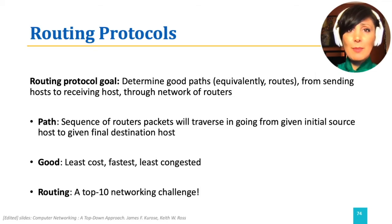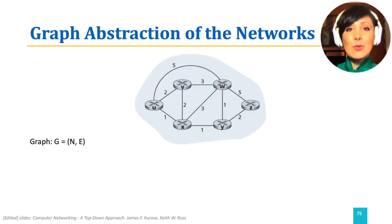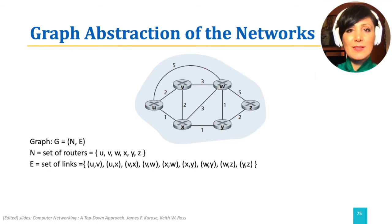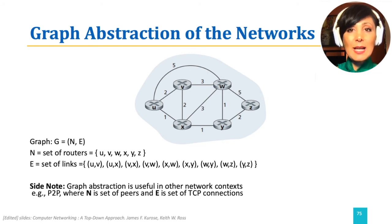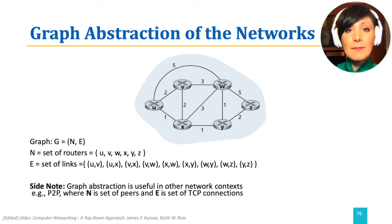This is not a trivial problem. We use a graph abstraction to formulate it. A graph has a set of N nodes and E links that connect the nodes. Nodes represent routers in the network. Links, depicted by a tuple consisting of two nodes, show the connections between those nodes. Note that graph abstraction with different definitions of N and E can be used in many other contexts — even in networking for other networks such as peer-to-peer networks, where N is the set of peers and E is the set of TCP connections.